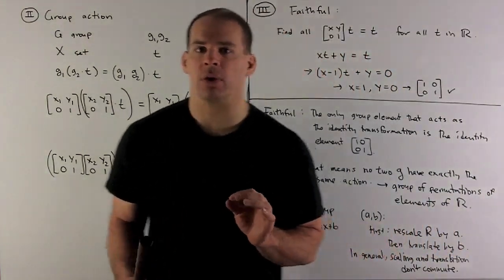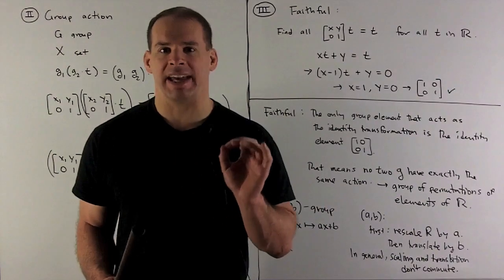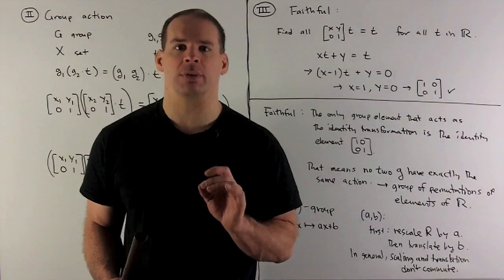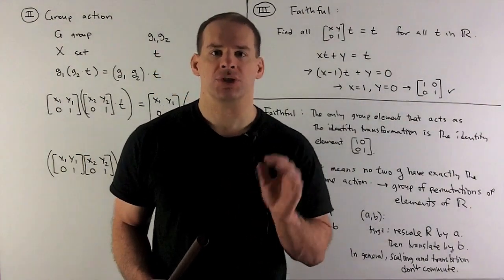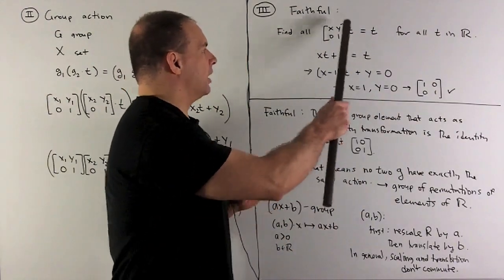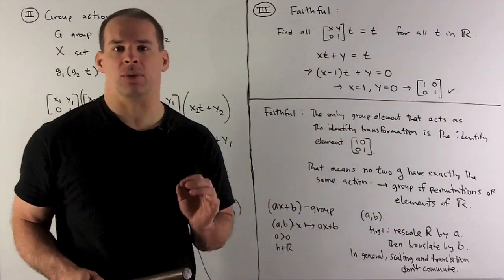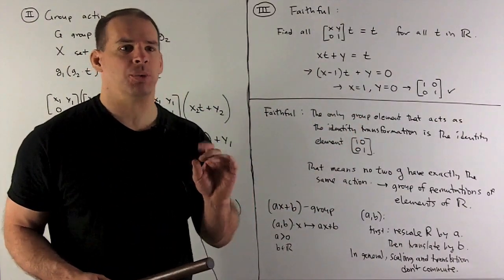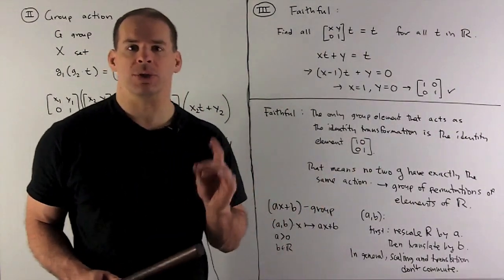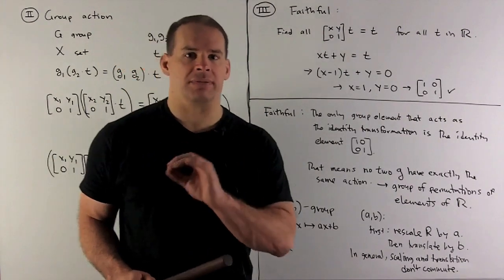If we want to show that's faithful, what's the idea here? We're looking for all group elements that give us the identity transformation. If we're faithful, then the only one that gives us the identity transformation is the identity group element. So let's set up that equation. That'll be take any group element, we're going to apply that to T, we're going to get T back for all T in the real line. When we write out the equation, we're going to have to have X equals one, Y equals zero, which means we started out with the identity matrix. So our action is faithful.